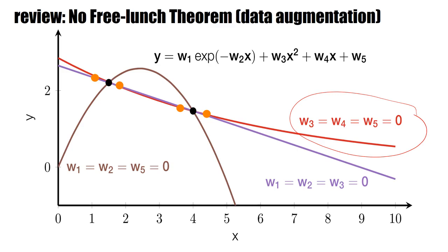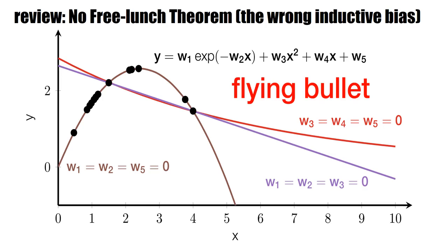Now, if the true data points, the black data points, come from something else, if these black data points actually come from a flying bullet, which means a parabola, then my data augmentation method that I used before would have been completely wrong. So you really see it's your prior knowledge about what you should expect that allows you to do data augmentation, that allows you to use your inductive bias. The wrong inductive bias gives you the wrong thing.